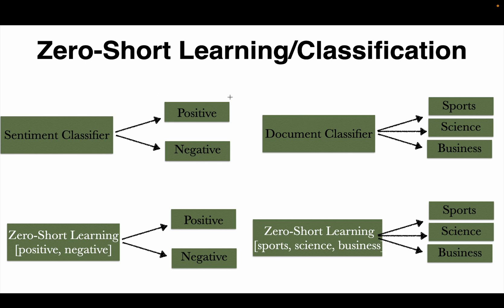In each case these models use a certain number of examples — let's say N examples — so that's what we call N-shot learning. Whereas in zero-shot learning we are not using any examples to train the models. That's why it is referred to as zero-shot learning.